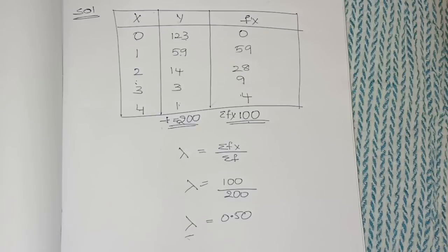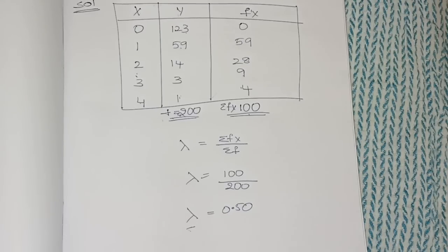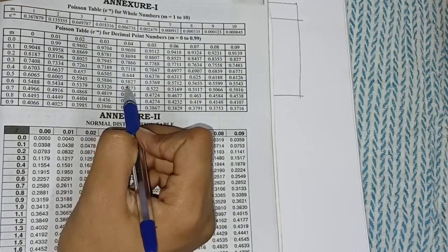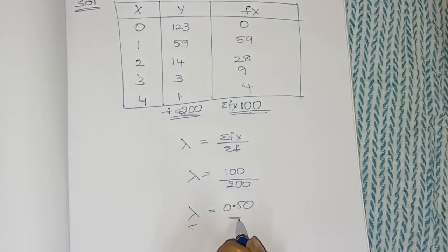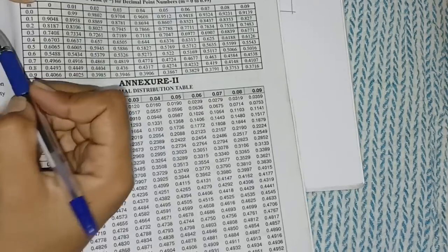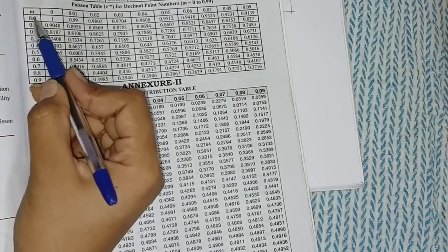I will show the Poisson distribution table now. You need to carry it with you, or some colleges will provide that table. You need to take a signature from the invigilator on that table, because some squads might accuse you of cheating. So before that, take the invigilator's signature on the table. This Poisson distribution table is allowed in examination.